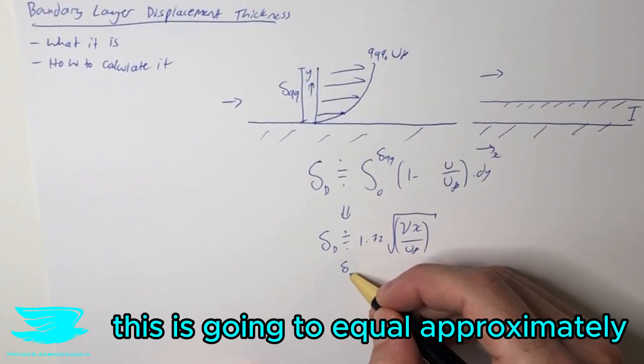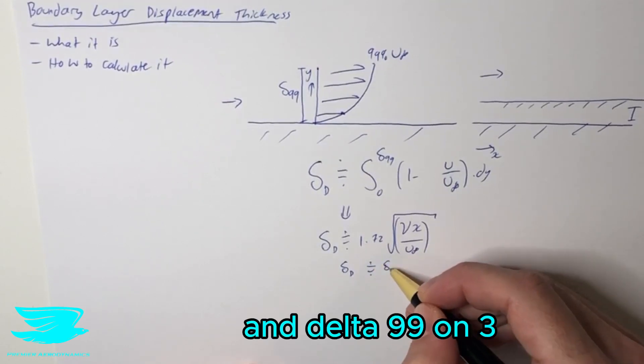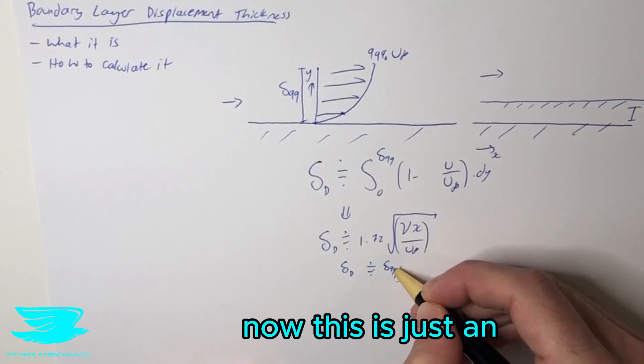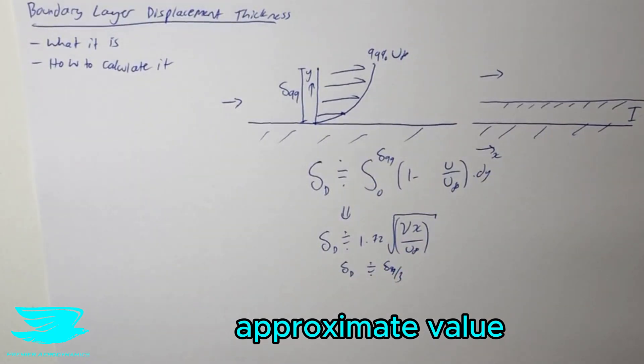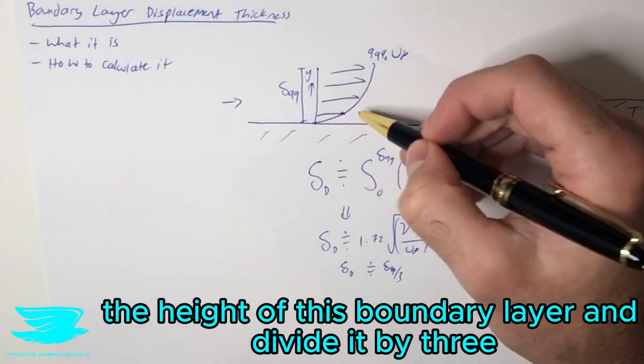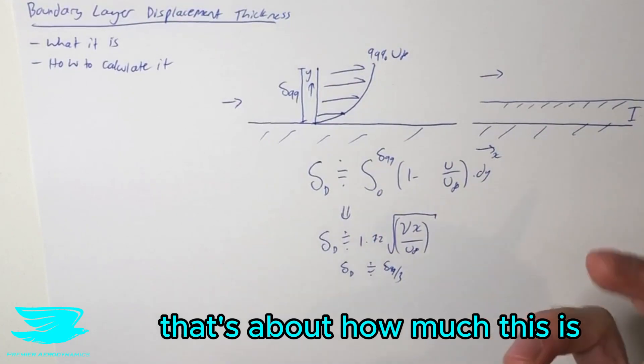And generally speaking, this is going to equal approximately delta 99 divided by 3. Now this is just an approximate value. So if we were to calculate the height of this boundary layer and divide it by 3, that's about how much this is.